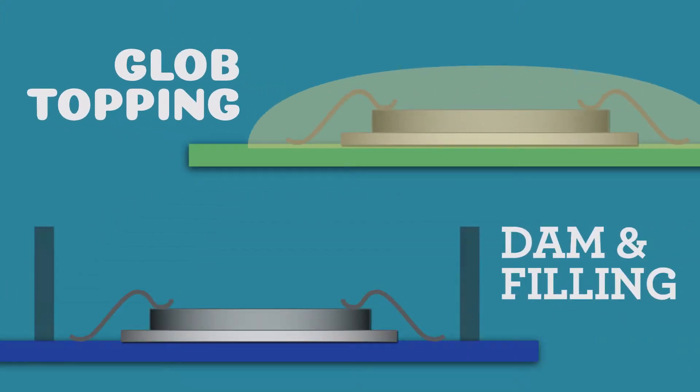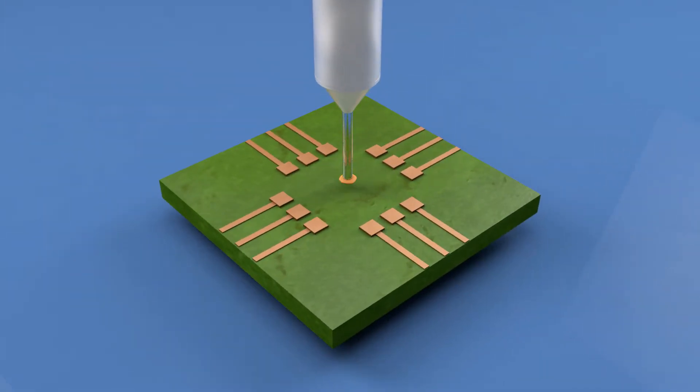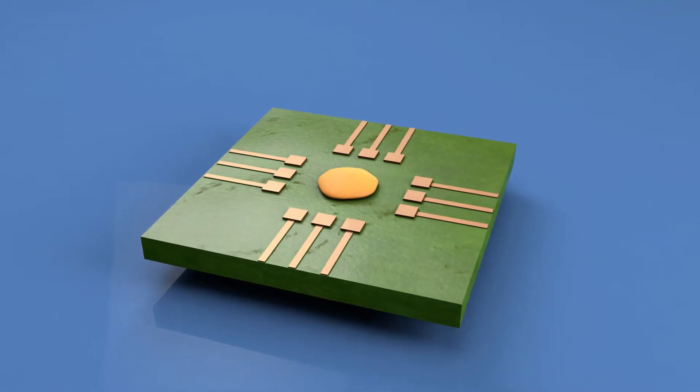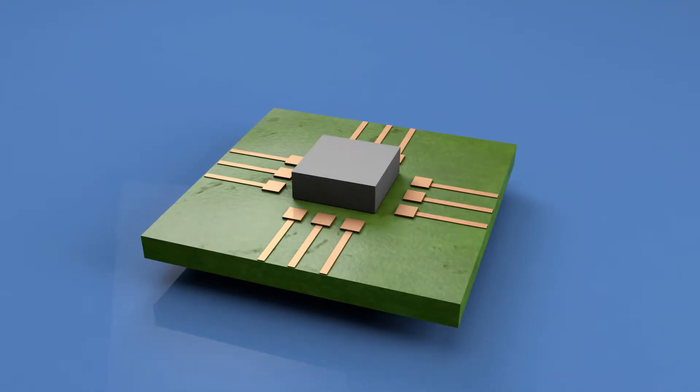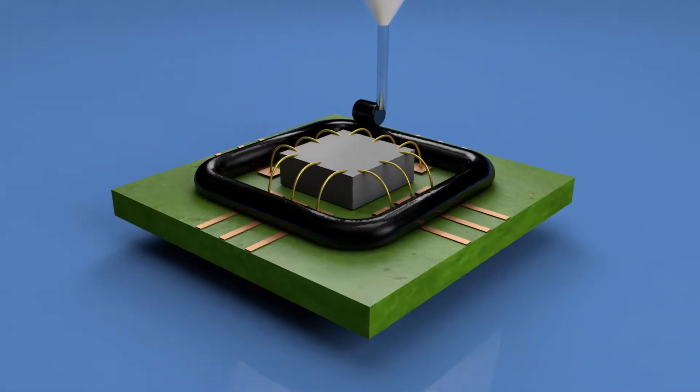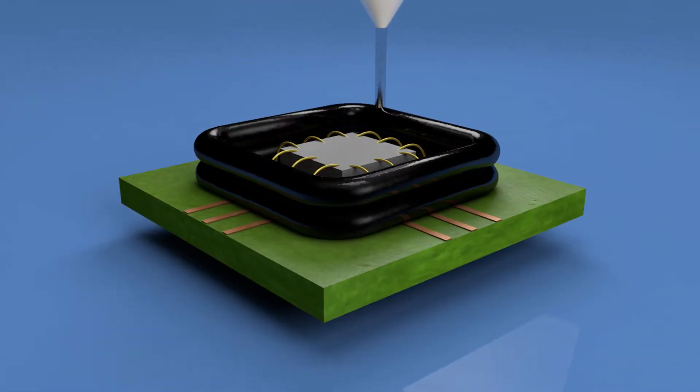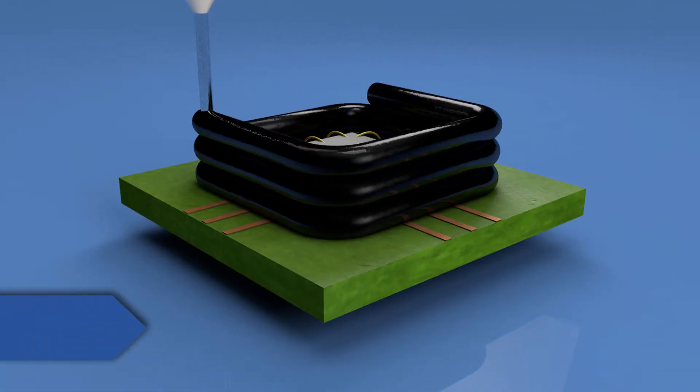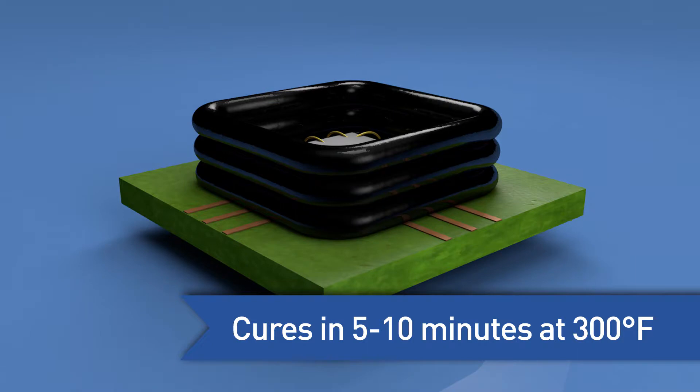Dam and filling entails dispensing the damming material around the area to be encapsulated. The dam and fill process begins by attaching the die to the circuit board and moves on to wire bonding. When that portion of the application is complete, Supreme 3HT ND-2DM is readily dispensed from a syringe or automated dispensing system to create a structurally sound barrier.